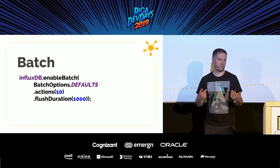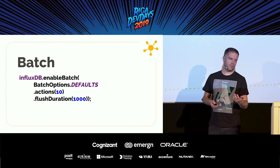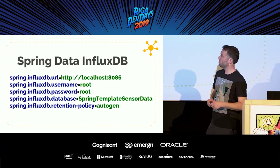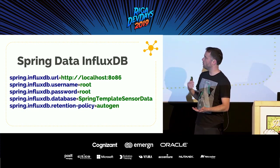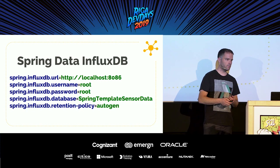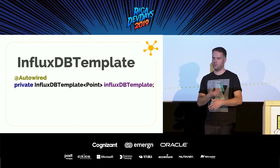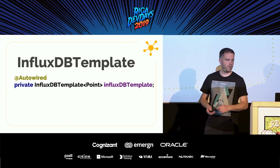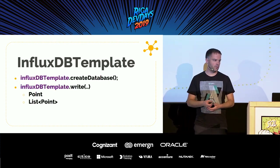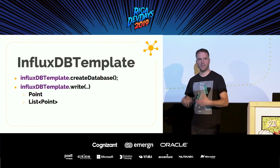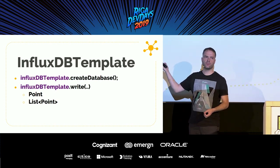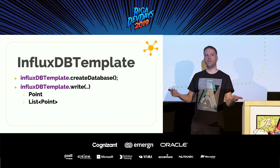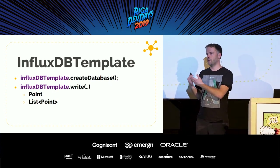If you're using Spring, you can use the somewhat easier form — Spring Data InfluxDB. Therefore, we specify some properties in our application.properties, things like password and which database we want to use. Then we can auto-wire an InfluxDB template, which looks a bit like a REST template or JDBC template — any template you've seen in Spring. This is a bit easier to set up: we can say 'create a database' and then 'write', and we can write one point or a list of points immediately — that uses batching underneath. If you have Spring already, I can highly recommend using this one.